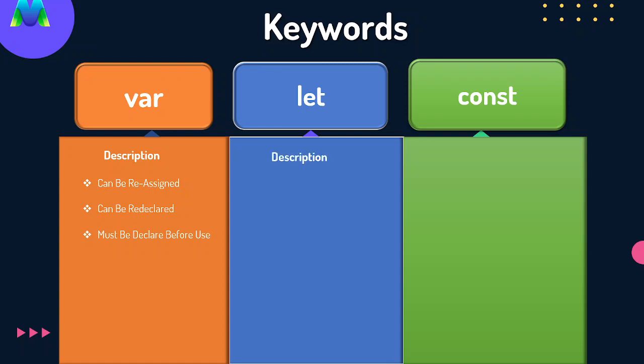Let's see the let specification. It was introduced in ES6 2015. As the var was the original JavaScript keyword made about 25 years ago, when ES6 was made, let was introduced as the latest version in 2015. It cannot be redeclared, but it can be reassigned. It must be declared for use.